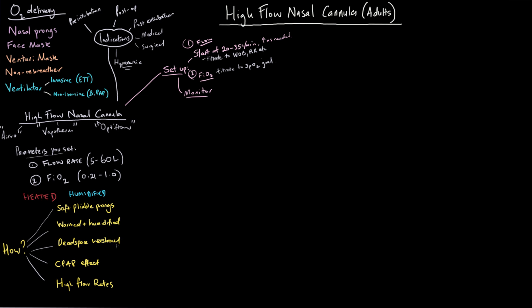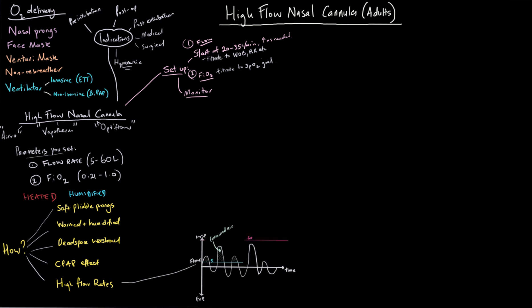The high flow rates are probably one of the key mechanisms for this device. Looking at a graph with flow on the y-axis and time on the x-axis — inspiratory flow above and expiratory flow below — the blue line represents a fixed flow rate of five liters per minute, simulating nasal prongs. This is 100% oxygen delivered continuously at five liters per minute across the board.